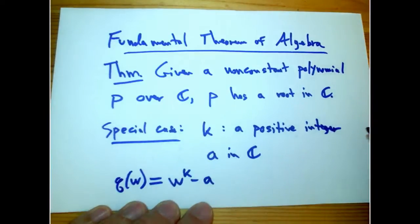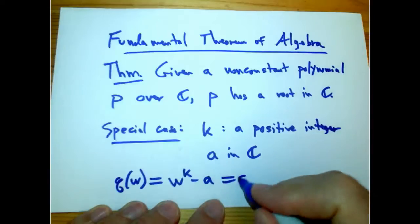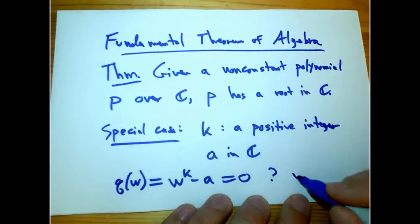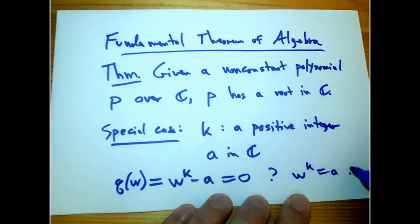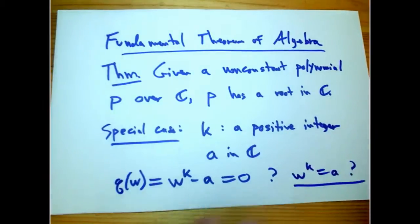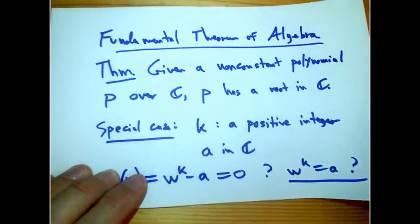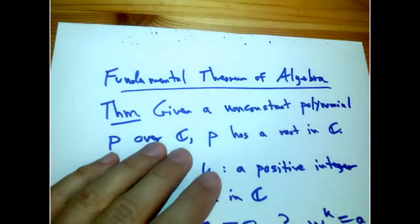That's exactly a special case of the situation, and we're trying to find, can we solve that equal zero? In other words, can I find a k-th root w of a? If we can't do that, then of course it's hopeless to solve general polynomial equations.